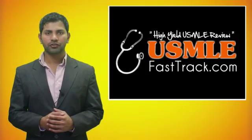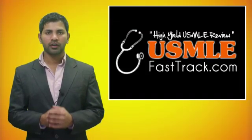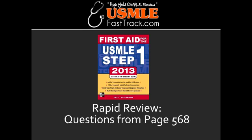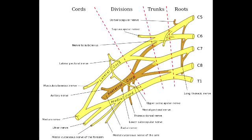Welcome to USMLEFastTrack.com. The section we're going to talk about today is from First Aid for the USMLE Step 1, 2013 edition, page 568, Rapid Review. What is Erb-Duchenne Palsy? Erb-Duchenne Palsy is the paralysis of the arm caused by injury to the superior trunk at the level of C5 and C6 of the brachial plexus.